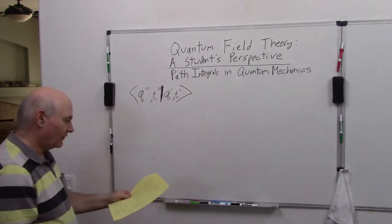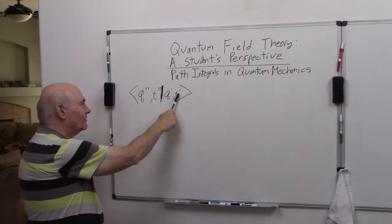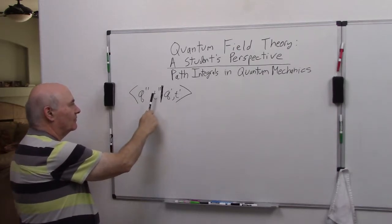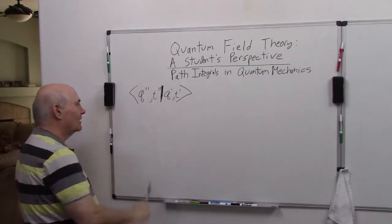In other words, at time t we're at this position, time t prime we're at this position. We want to know the amplitude the particle at time t double prime will be at q double prime.